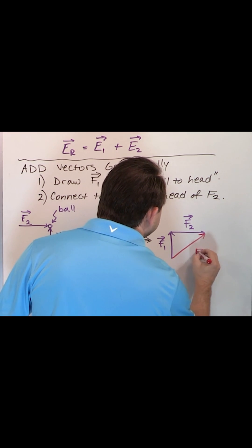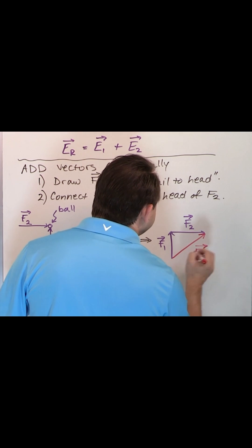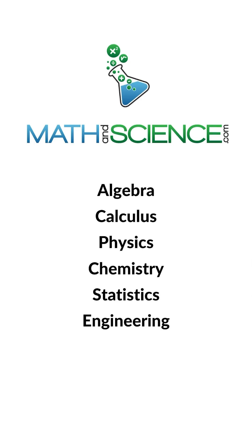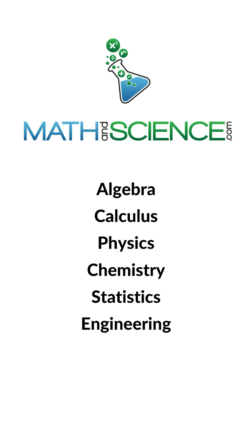You draw it and you call this FR. This is the resultant vector. This is the sum of those two. Learn anything at mathandscience.com.